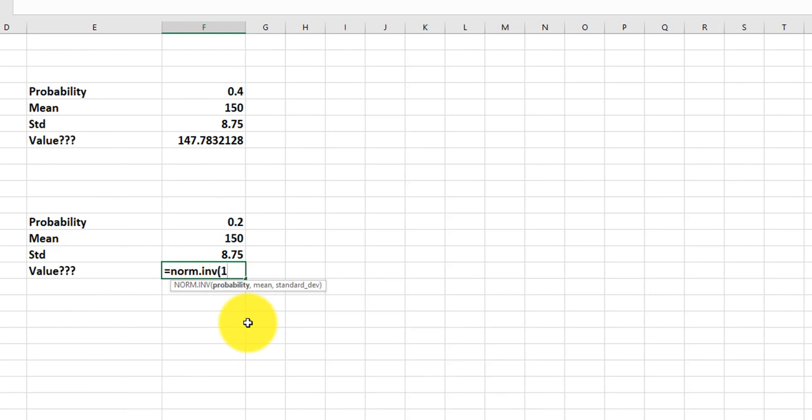So if I do 1 minus 0.2 for my probability, comma, and the mean was the 150, and the standard deviation was the 8.75. I think I got that in there correctly. Let's see. I press enter.